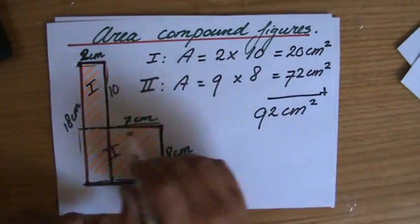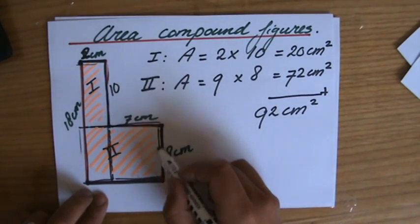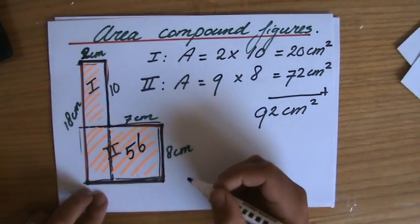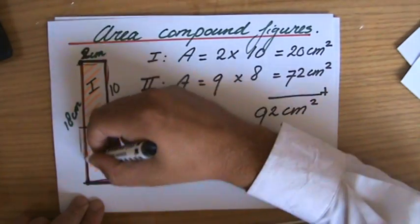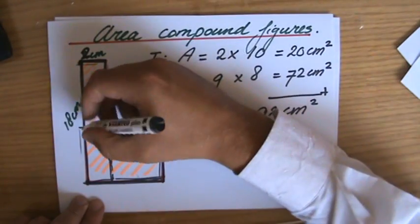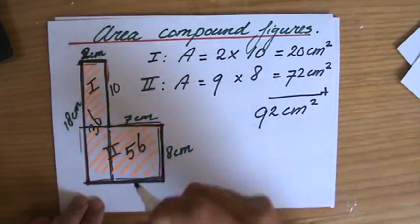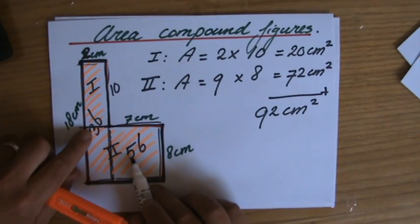Perhaps you want to try it. I'll do it quickly for you. Seven times eight, that is going to be 56. And here you would have 18 times two, that is 36. And 36 plus 56: 92 indeed.